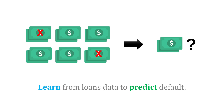Or computers could learn from loans data at a bank to predict if a loan might default. They have data about whether a loan was fully paid or defaulted on, and they use that to predict things in the future.